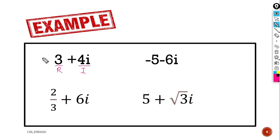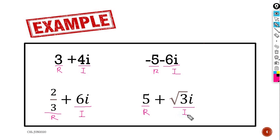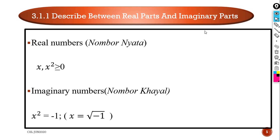Negative 5 is the real part and negative 6i is the imaginary part. 2/3 is the real part and 6i is the imaginary part. For the last one, 5 is the real part and √3·i is the imaginary part. Now, let's describe the difference between real parts and imaginary parts.